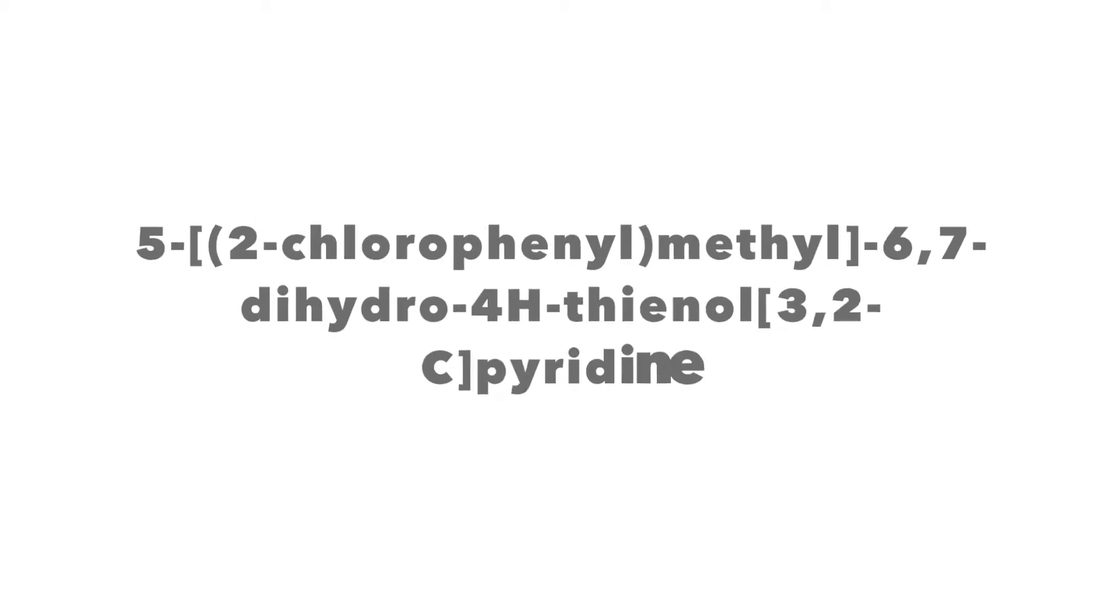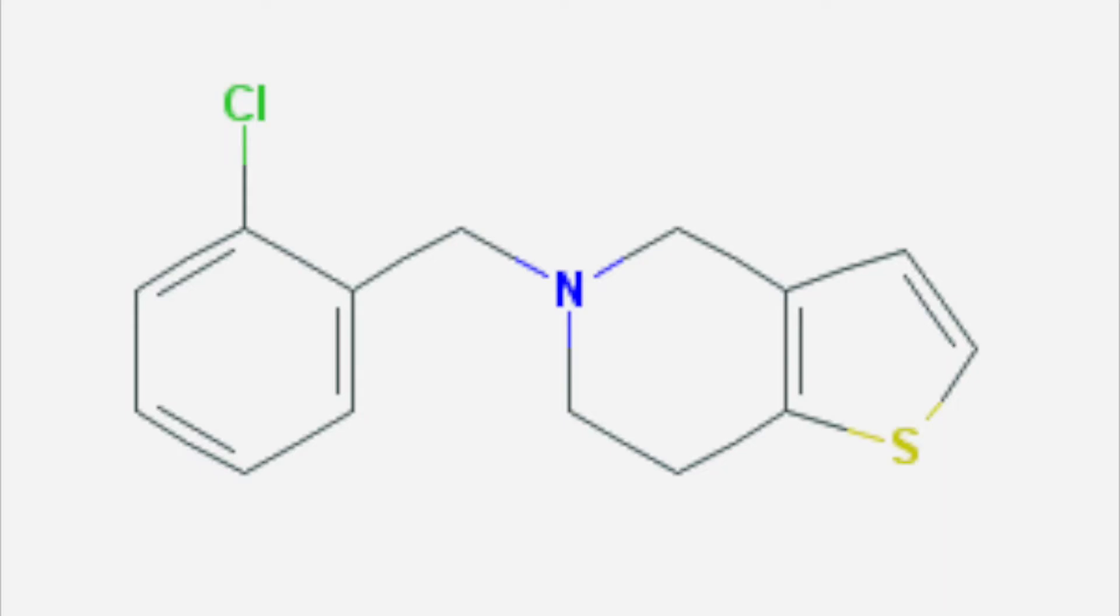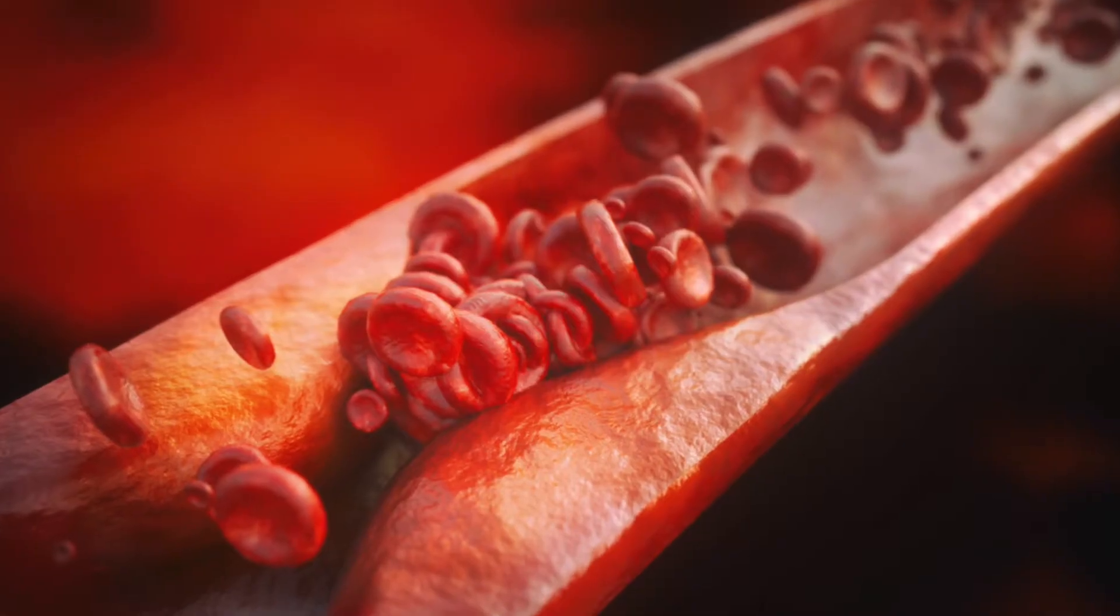Ticlopidin, known as 5,2-chlorophenyl-methyl-6,7-dihydro-4-H-phenol-3,2-C-pyridin, is an inhibitor of platelet aggregation that is used to decrease the risk of stroke in patients with atherosclerosis.